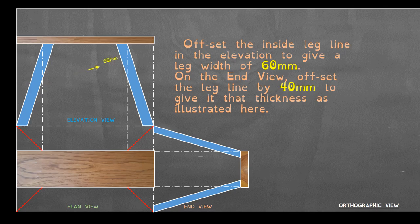Offset the inside leg line in the elevation to give it a leg width of 60mm as shown in yellow. On the end view offset the leg line by 40mm to give it that thickness as also illustrated in yellow.